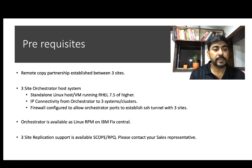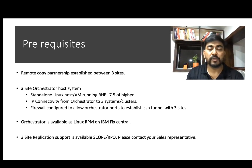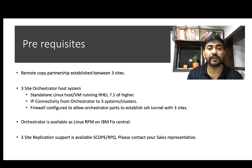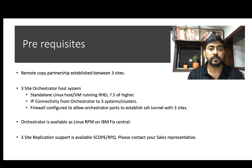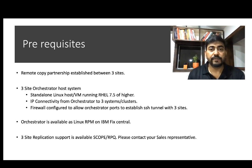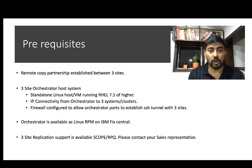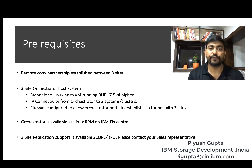Now let's look at a few prerequisites. Make sure you have a remote copy partnership established between all three systems. Make sure the three-site orchestrator host system is deployed using a RHEL host machine or virtual machine running version 7.5 or higher. Ensure IP connectivity is established between the orchestrator system and all three Spectrum Virtualize cluster systems, and that the firewall is appropriately configured to allow the SSH tunnel. The Orchestrator RPM is available on the IBM Fix Central website for download. The three-site solution is presently delivered through an RPQ process, so please get in touch with your IBM sales representative if you are interested, or you can write to the presenter at the email address shown on screen for more technical details.